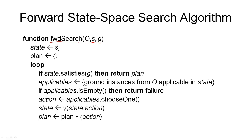The algorithm works by starting from the initial state and searching from here, and it also builds up a solution plan as we go through this loop. The first thing in the loop we do is test whether we have reached a goal state. The goal test is whether the state we're currently looking at — initially this is the initial state — satisfies the goal. If this is the case, then we can return our plan, initially the empty plan. So if our initial state was a goal state, then we return the empty plan and we're done.